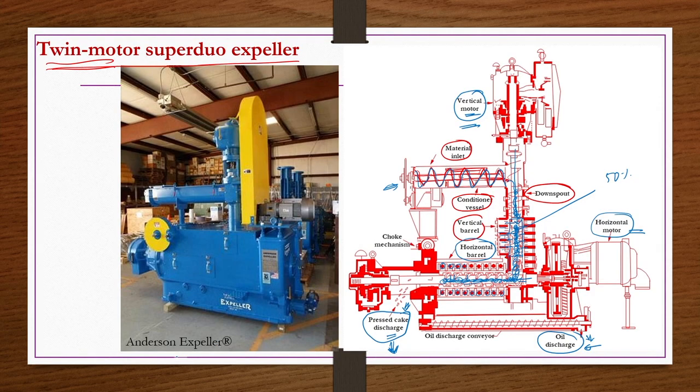Such expellers are also used for extraction of other types of vegetable oils. A commercial Anderson expeller is shown: the vertical motor and horizontal motor are visible, the material comes in via the screw conveyor, is crushed, and the conditioning vessel is also integrated. Oil is collected from the bottom while the discharge cake is collected separately.